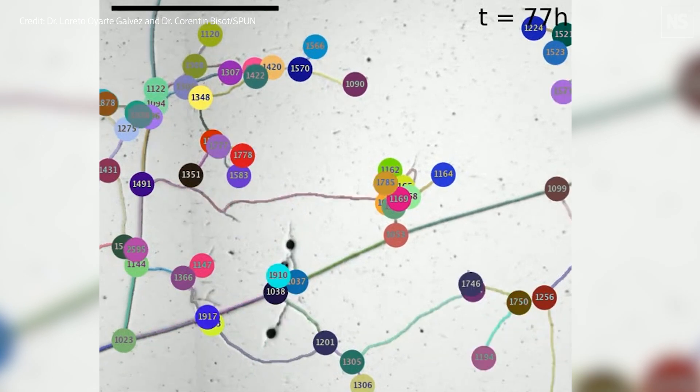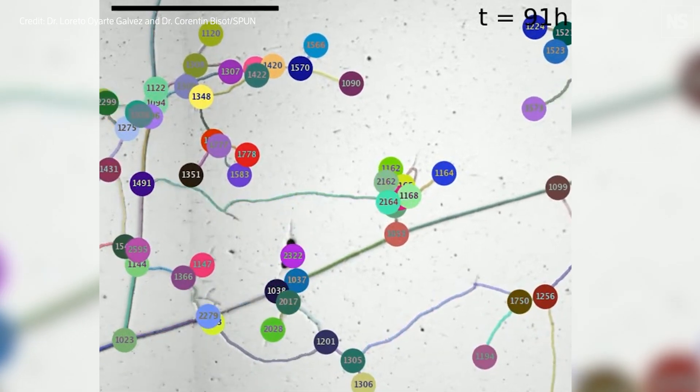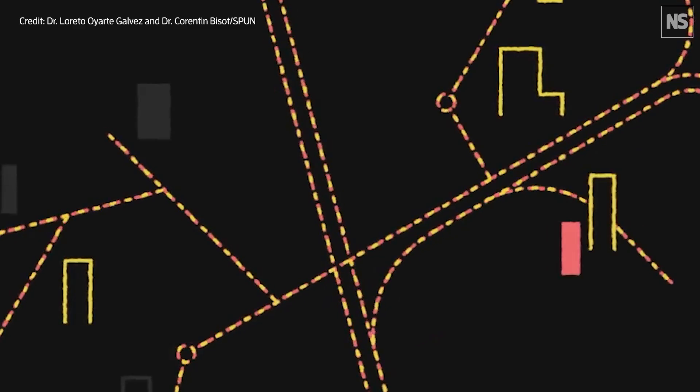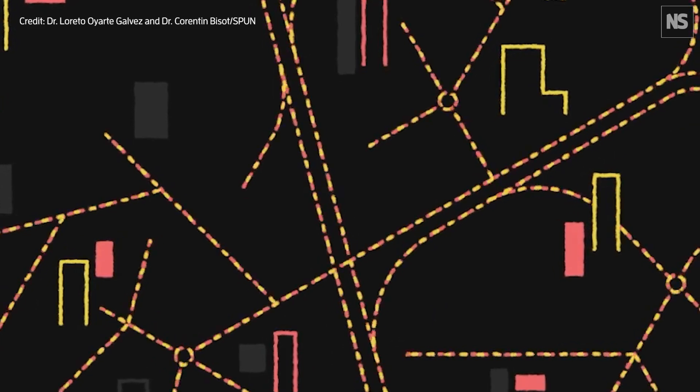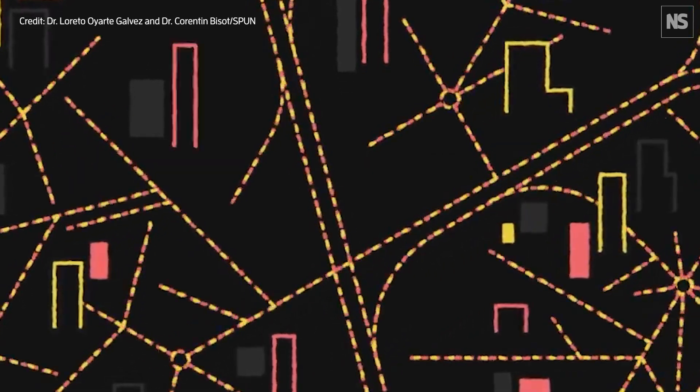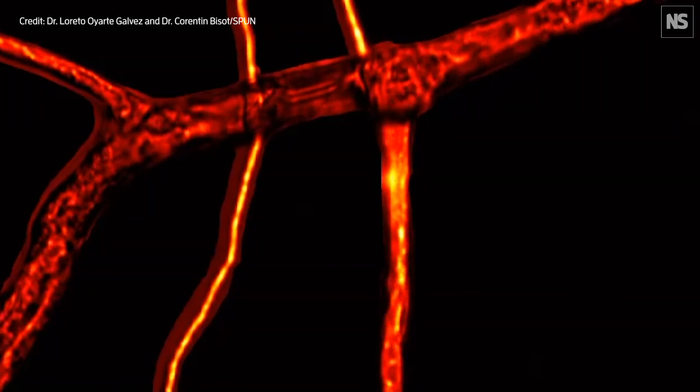And that's the commodity they can exchange for more carbon. So like a sophisticated supply chain, this allows mycorrhizal fungi to construct networks that are both expansive and efficient.